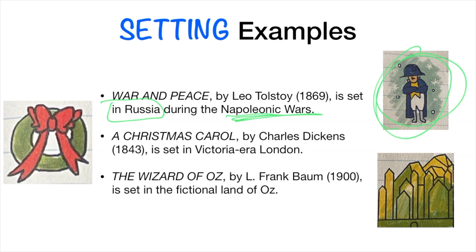In Charles Dickens' Christmas Carol, it's set in Victorian-era London. So London is the location, Victorian-era is the time period, but also Christmastime specifically.